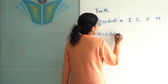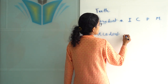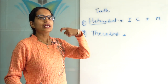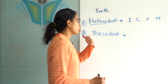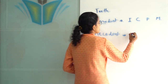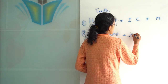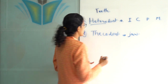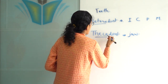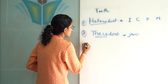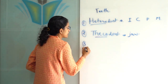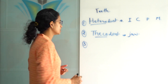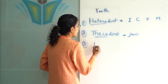The second important characteristic is that human teeth are thecodont. Thecodont means that the teeth are embedded in the jaw — they are well socketed in the jaw — and therefore they are known as thecodont.